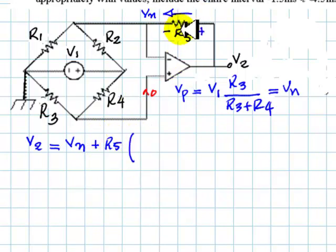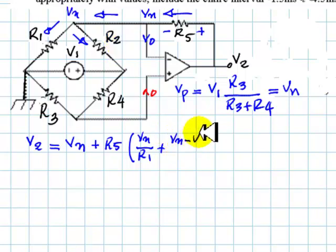We say that is plus R5 multiplied by the current flowing through. What current is that? Well this current here is zero, we know that for sure. So the current in the resistor R5 is the same one here. And that is the sum of this one plus this one. So that current is Vn divided by R1 plus Vn minus V1 over R2.